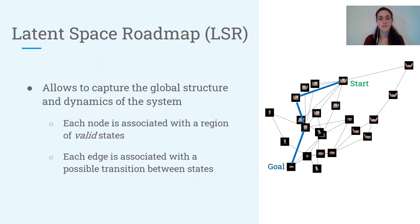So the basic idea is that each node of this graph is associated with a region of valid states of the system, while each edge is associated with a possible transition between states.